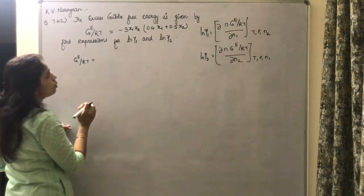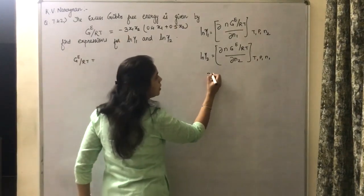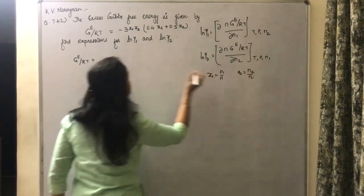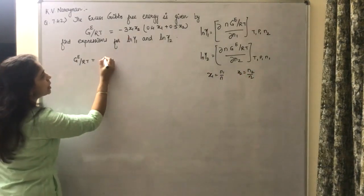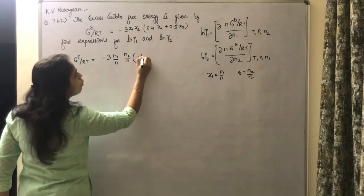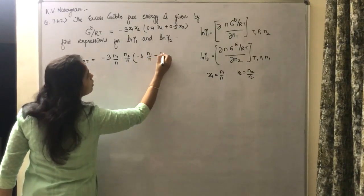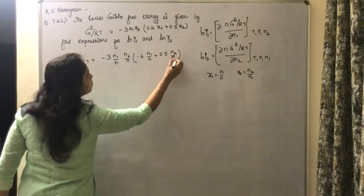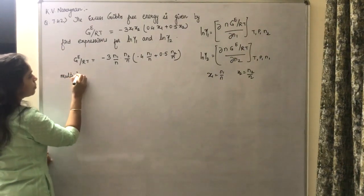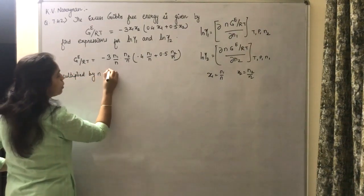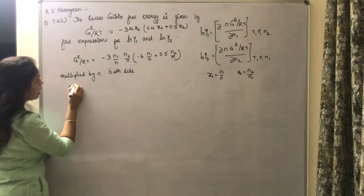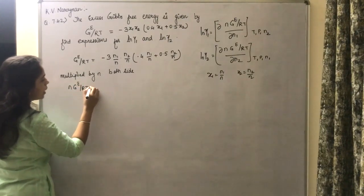What we do here is replace x₁ by N₁/N and x₂ by N₂/N. So directly substituting: minus 3·(N₁/N)·(N₂/N)·(0.4·N₁/N + 0.5·N₂/N). Now multiply both sides by N.